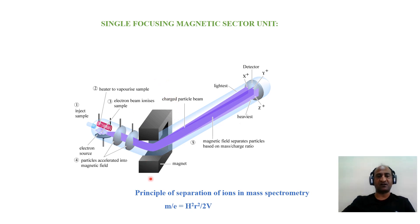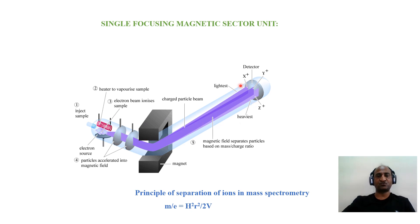The equation of separation in magnetic sector mass spectrometry is: M/E = H²R²/2V, where H is the magnetic field and V is the voltage. Mass-to-charge depends on the radius, since the magnetic field and voltage are fixed. Masses that are too heavy bend less, too light bend too far, and appropriate ions reach the detector. By scanning the voltage or magnetic field, we can collect all ions in the mass instrument.